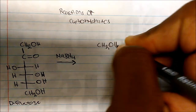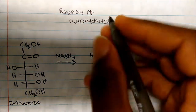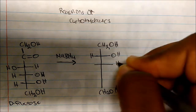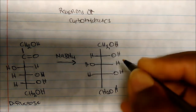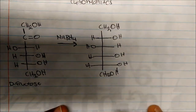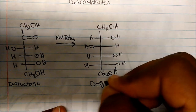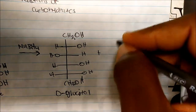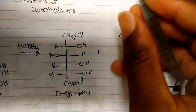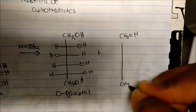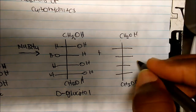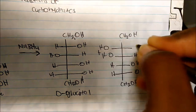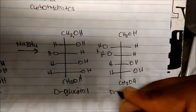What I'll actually create is an alcohol. There's my CH2OH. So this is the product I'm going to get. We get D-Glucitol — this is actually called D-Glucitol. But we get a mixture: D-Glucitol plus this other product here.